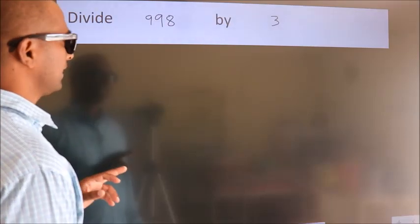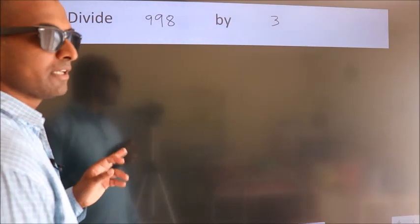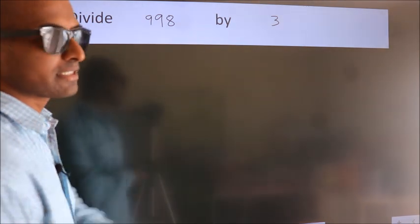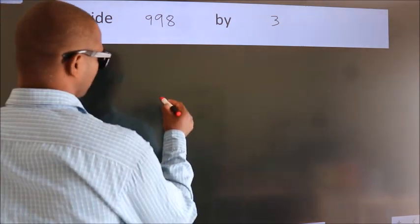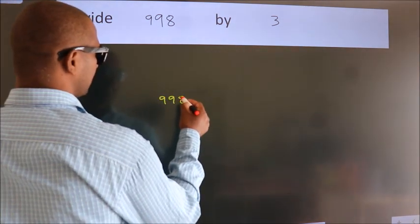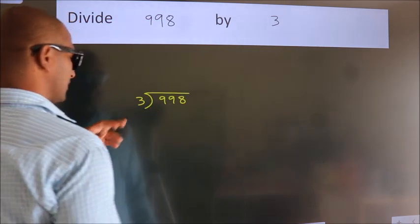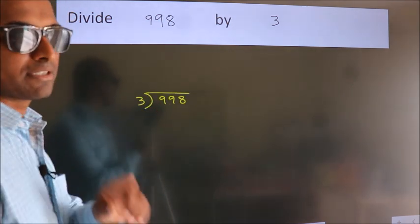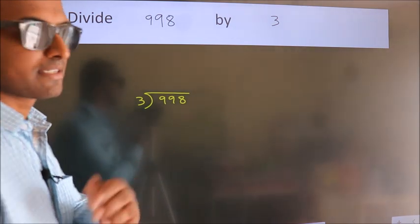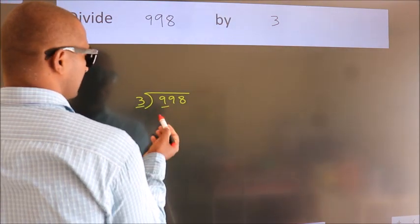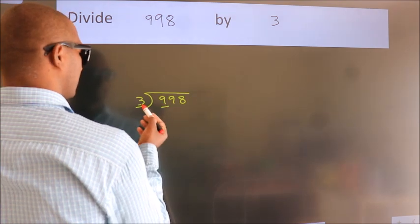Divide 998 by 3. To do this division, we should frame it in this way: 998 here, 3 here. This is your step one. Next, here we have 9. Three, when do we get 9 in three table?